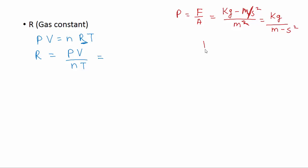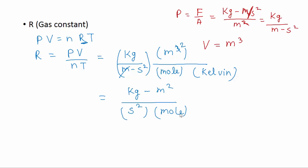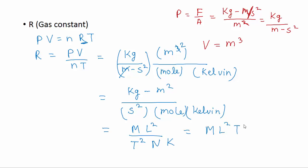Volume has unit m³. Plugging in: pressure is kg·m⁻¹·s⁻², volume is m³, n is in moles, T is in kelvin. One meter cancels, giving kg·m²·s⁻² in the numerator and mole·kelvin in the denominator. In dimensional form: kg → M, m² → L², s⁻² → T⁻², mole → N, kelvin → K. So the dimension of R is M·L²·T⁻²·N⁻¹·K⁻¹.